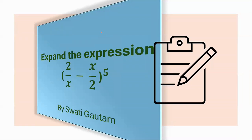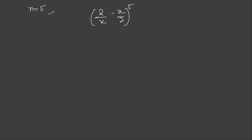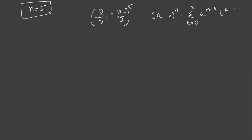Let's expand the expression. The expression is (2/x - x/2) raised to the power 5. The power equals n, so n is 5. The binomial theorem states that (a+b)^n equals the summation from k=0 to n of nCk times a raised to the power (n minus k) times b raised to the power k. This is the expansion of the binomial with power n.